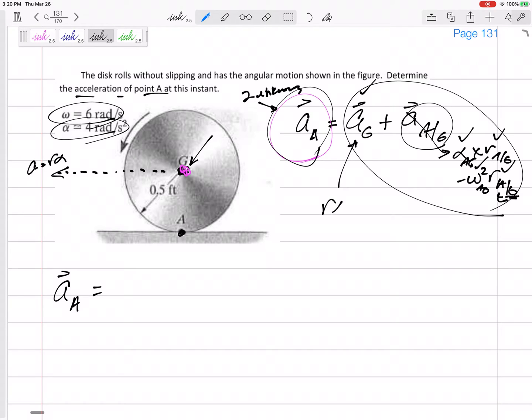It is R alpha. It is 0.5 times 4. So it is 2. And it's in the negative I. So negative 2 in the I, would you agree? That's the acceleration of point G.